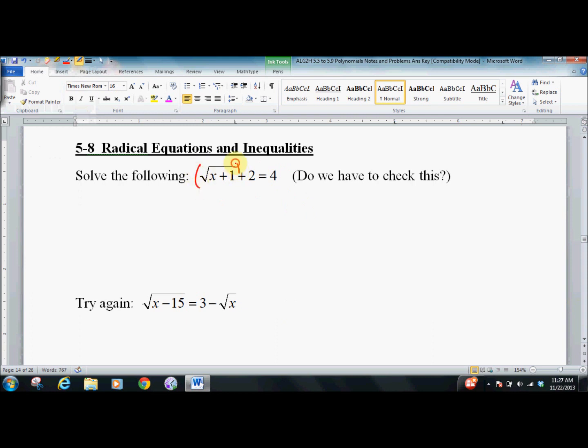Well, I always tell people we get the radical alone, and then we can square away the square root. So to do that, move the negative 2 over by subtracting both sides, and we get 2.